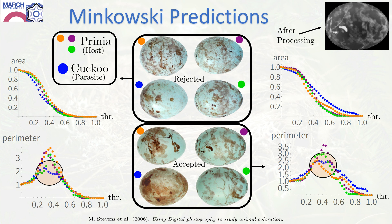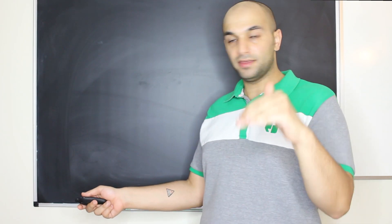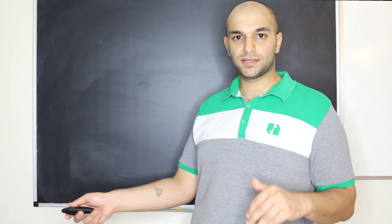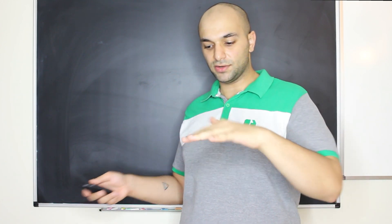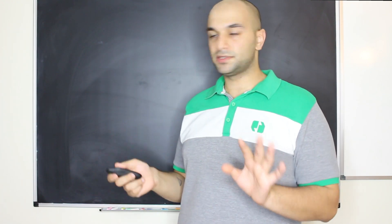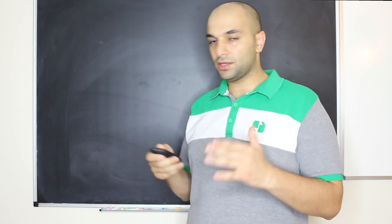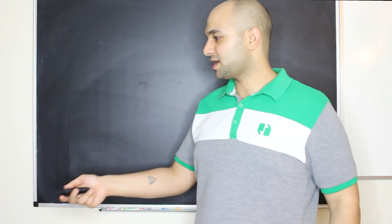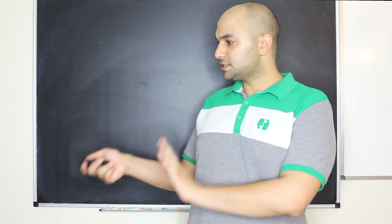On the other side, another egg also looks different to the eye but got accepted. There could be several reasons — maybe the mother is young and hasn't yet learned what her eggs look like. But looking at the perimeter signature, the host eggs themselves vary a lot, and the parasite egg lies within that variation, so there's no obvious detectable difference. The only difference shows up at the highest thresholds as a long tail, corresponding to a very dark spot on the parasite egg — but that seems not to change the outcome, possibly depending on image normalization.